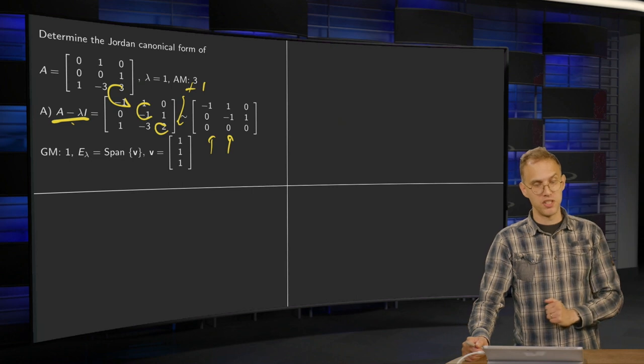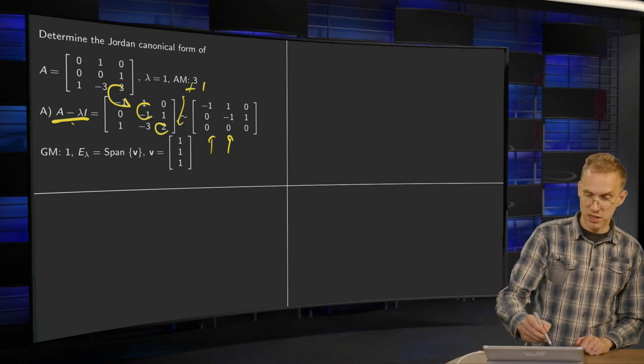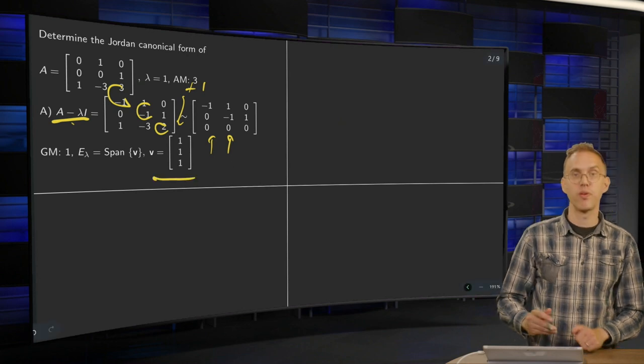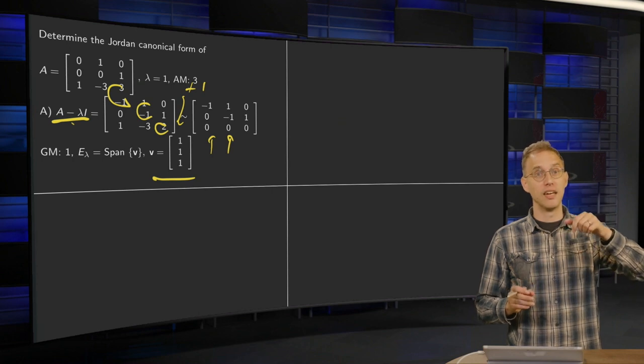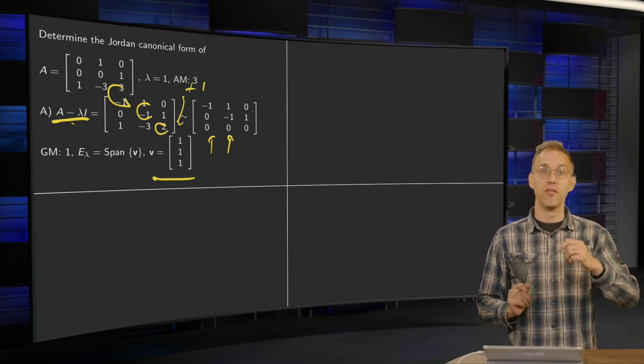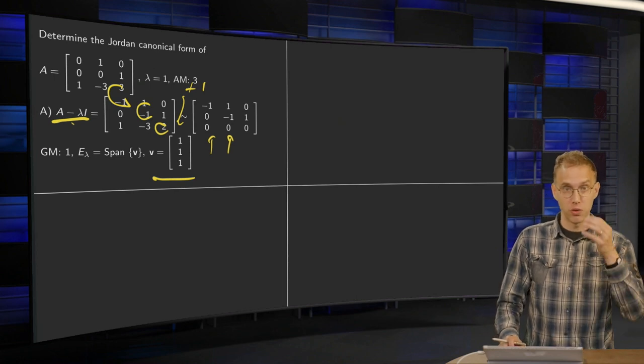So the geometric multiplicity of this eigenvalue is 1, and the E lambda is a span of V where V equals (1, 1, 1). So we already see that we are going to get one cycle of length 3, which ends at V equals (1, 1, 1).